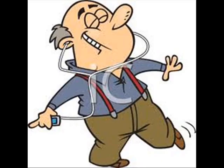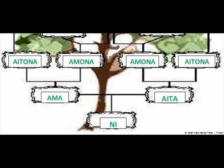So, me — I have ama and aita. Then I have two amonas and two aitonas: bi amona, bi aitona.